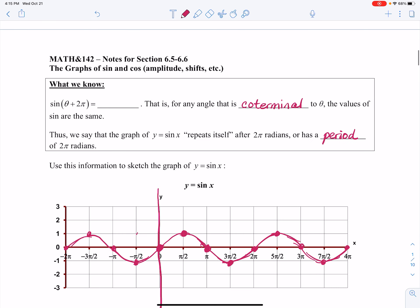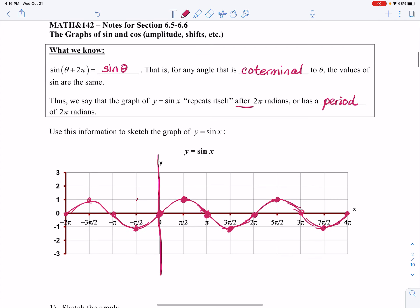So remember that sine of theta plus 2 pi is the same as sine of theta. And remember that the magic word there is that because the angles are coterminal to each other. So that means that when we go to graph just the sine of the angle, as the angle increases and increases, it's going to repeat itself every 2 pi radians, which is this whole idea of what a period is.